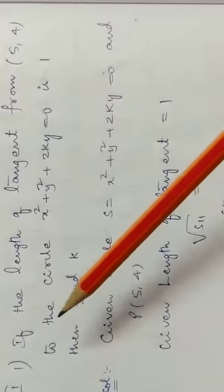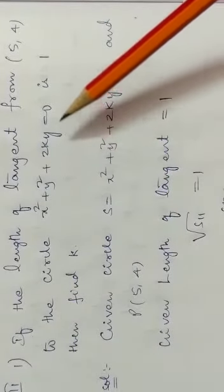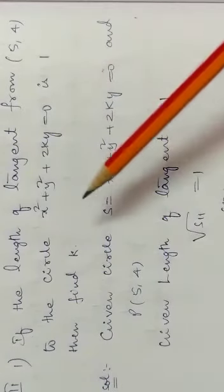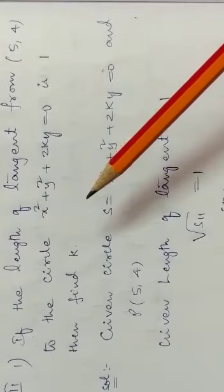If length of tangent from 5 comma 4 to the circle x square plus y square plus 2ky equal to 0 is 1, find k. This is the converse type of previous problems.